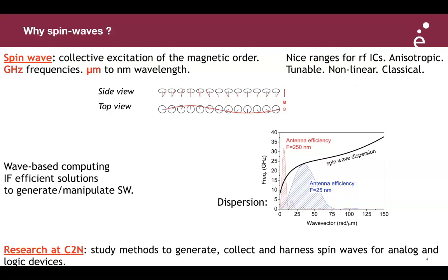Spin waves are also very easily put into the nonlinear regime, making them an interesting candidate for wave computing. The main problem at the moment is that it's difficult to generate spin waves in an energy-efficient way and to measure them in a practical way. Most of the research in our group at C2N focuses on studying electrical or magneto-optical methods to generate, collect, and harness the properties of spin waves for computing devices.